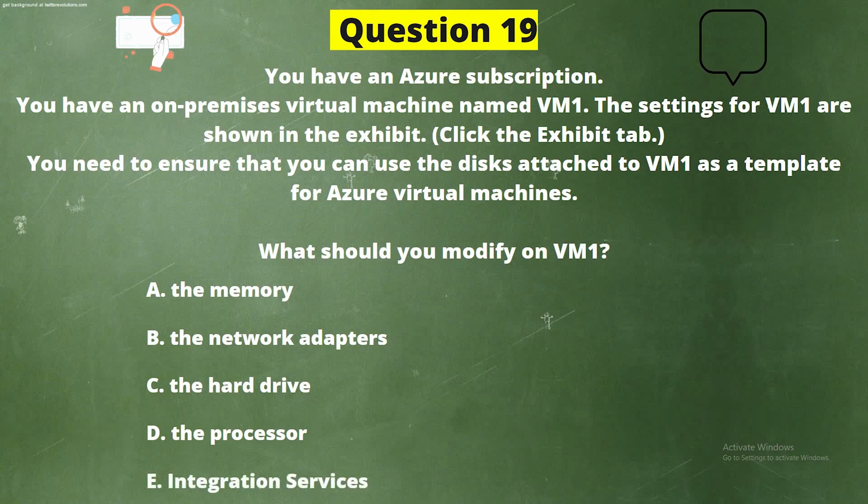Question 21. You have two subscriptions named Subscription 1 and Subscription 2, each associated with a different Azure AD tenant. Subscription 1 contains a virtual network named VNet1 with an IP address space of 10.0.0.0/16, hosting VM1. Subscription 2 contains VNet2 with an IP address space of 10.10.0.0/24, hosting VM2. You need to connect VNet1 to VNet2. What should you do first? Options: A) move VM1 to Subscription 2, B) modify the IP address space of VNet2, C) provision virtual network gateways, D) move VNet1 to Subscription 2. The correct answer is Option C — provision virtual network gateways.